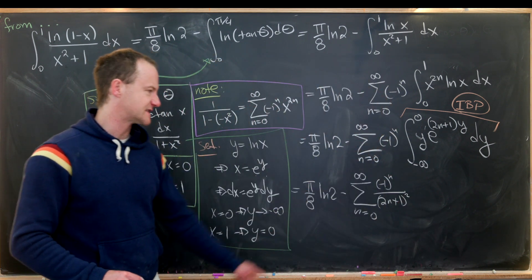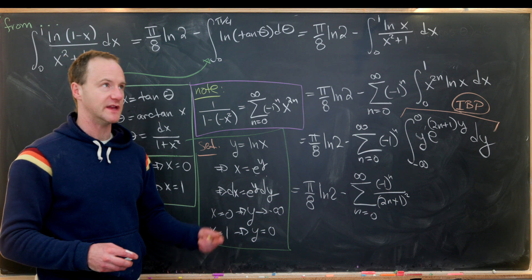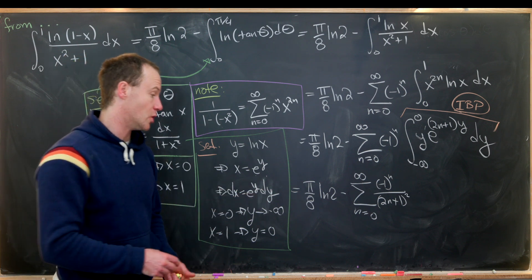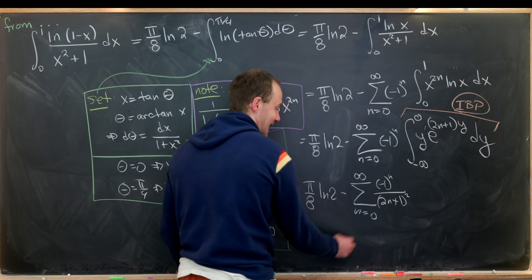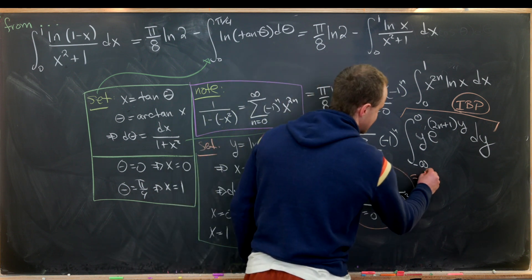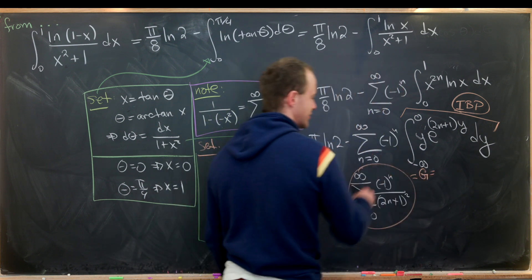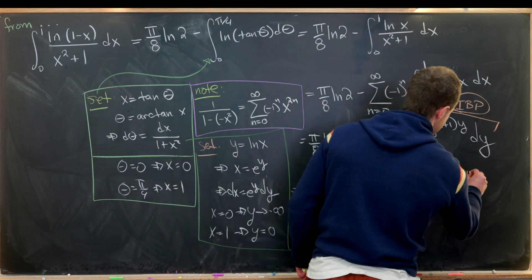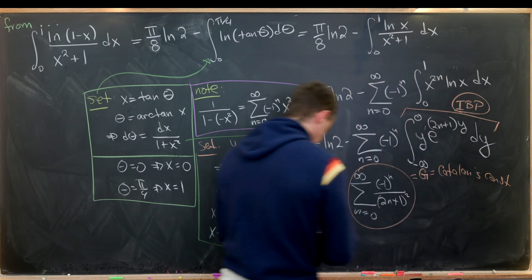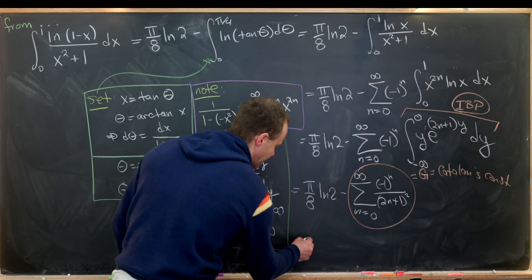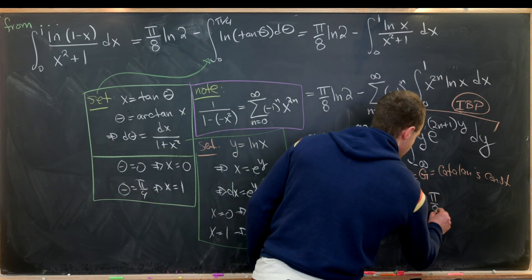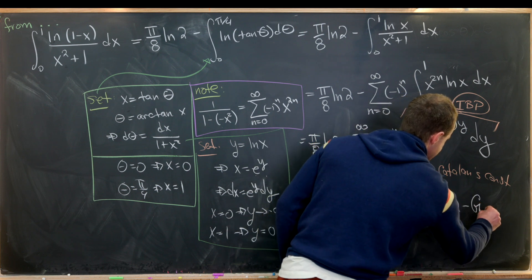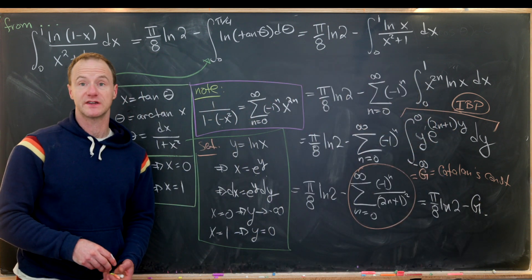This sum doesn't have a closed form in terms of pi, e, or natural logs, but it has its own name: Catalan's constant, generally denoted capital G. So our final answer is pi over 8 times the natural log of 2, minus Catalan's constant G.